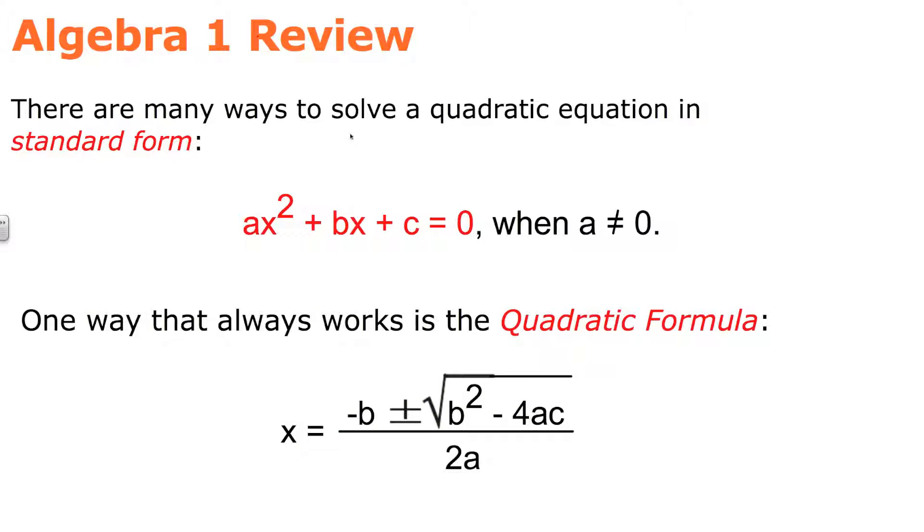There are many ways to solve a quadratic equation in standard form. First, that standard form of a quadratic equation is ax² + bx + c = 0. You have to remember a, b, and c are going to be numbers. a is not allowed to be equal to zero in this case. With a being zero, we don't have a quadratic anymore. We have a linear equation.